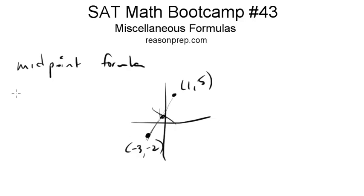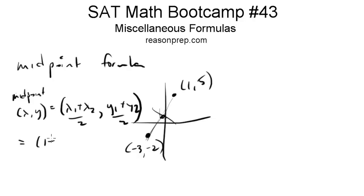To find that, you just do the following. The midpoint (x, y) is just going to be (x1 + x2)/2, (y1 + y2)/2. You're pretty much just taking the average of these two points. So in this example here, it would just be (1 + (-3))/2 and (5 + (-2))/2. This is the same thing as (-1, 3/2).